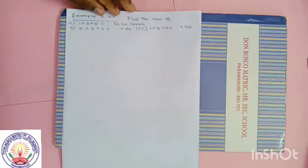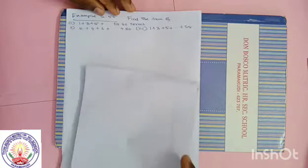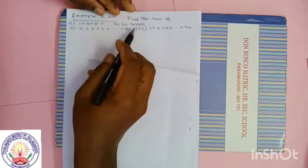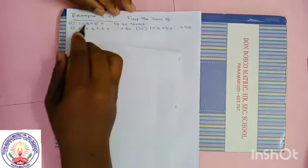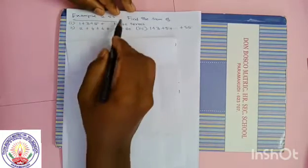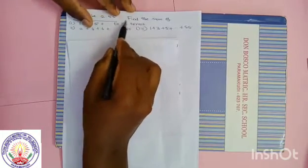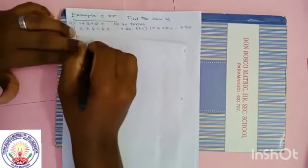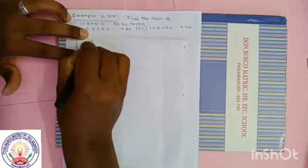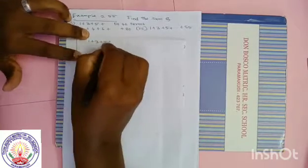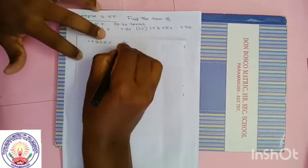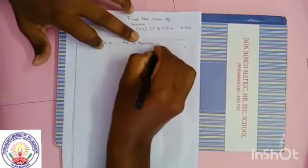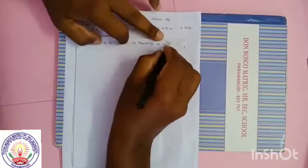These are 3 questions, two more questions. First one, look at the numbers 1, 3, 5 — these are odd numbers. 40 terms means n is given. So when n is given, the sum of the first n odd numbers — 1 plus 3 plus 5 plus dot dot dot to n terms — the formula is n square.